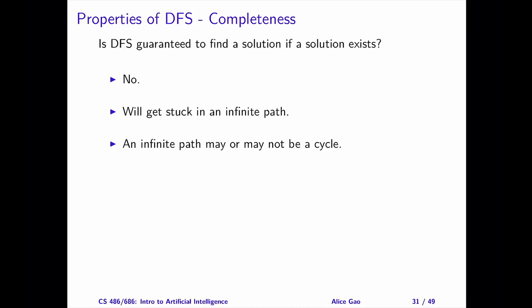The search tree may have an infinite path for several reasons. For example, if the search graph has a cycle, then the corresponding search tree will have an infinite path. Alternatively, the search tree may have an infinite path not because of a cycle. I encourage you to find an example where the search tree has an infinite path, but the search graph has no cycles.